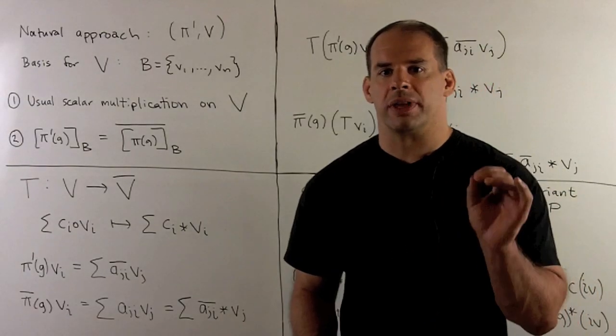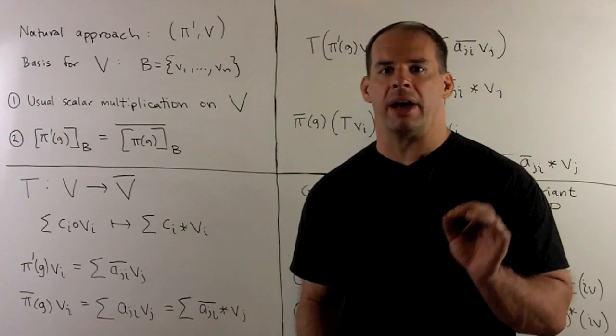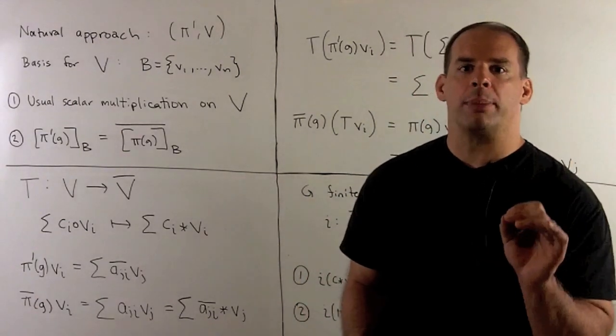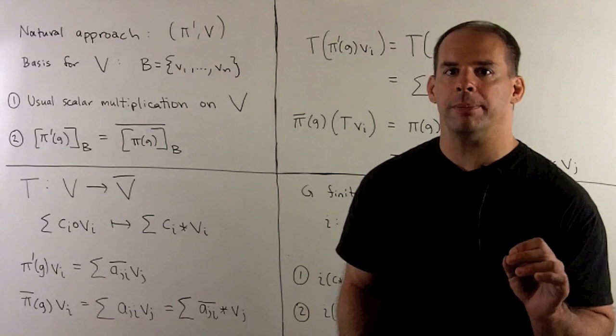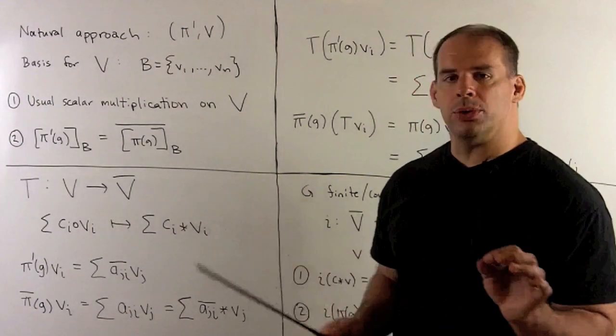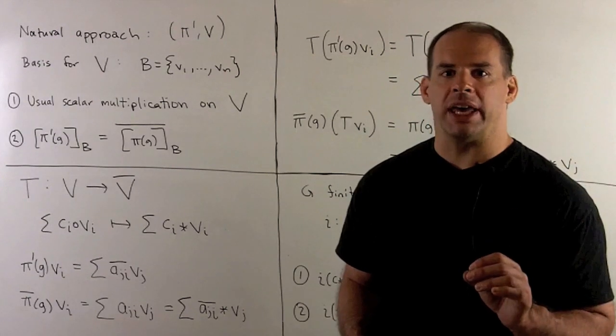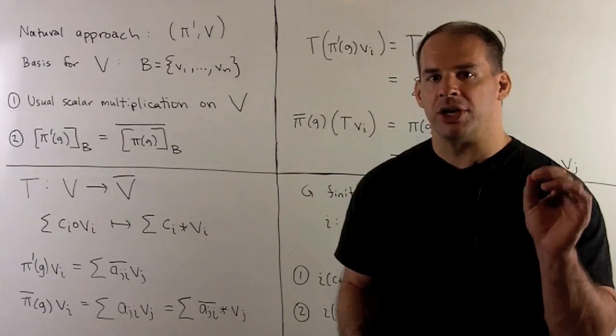Here's another approach to the conjugate representation for pi V. First, I'll define a new representation, pi prime V. We're going to use the same vector space V. We'll have the usual scalar multiplication. But, we're going to change the group action.